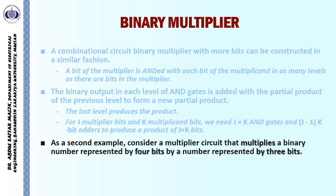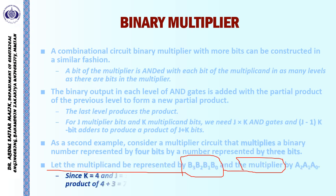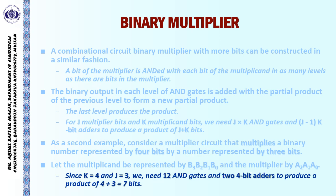As a second example, consider a multiplier circuit that multiplies a 4-bit binary number by a 3-bit binary number. Let the multiplicand be represented by B with bits B0, B1, B2, and B3, and the multiplier be A with bits A0, A1, A2, and A3. Since K = 4 and J = 3, we need 12 AND gates and two 4-bit adders to produce a product of 7 bits.